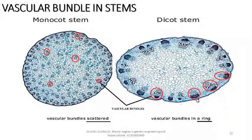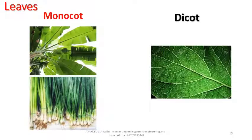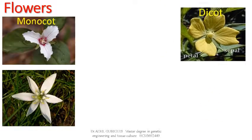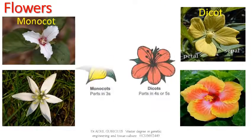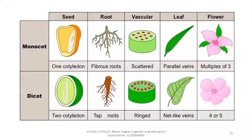Number 3 — Vascular bundles and stems: monocots have scattered vascular bundles containing xylem and phloem, while dicots have well-arranged vascular bundles in a ring. Number 4 — Leaves: monocot leaves are narrow with parallel veins (venation), while dicot leaves are broad with a network or branched venation. Number 5 — Flowers: in monocots, floral parts like petals lie in threes or multiples of three; in dicots, floral parts lie in 4 or 5 and their multiples.